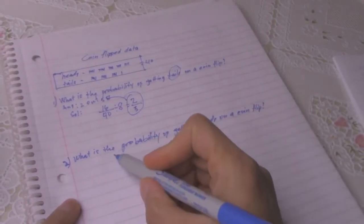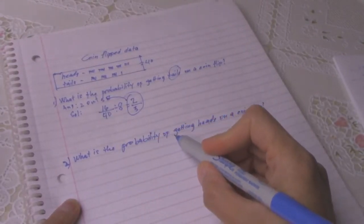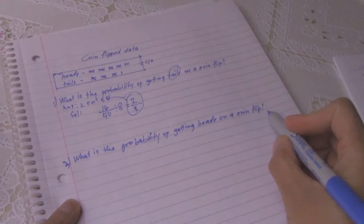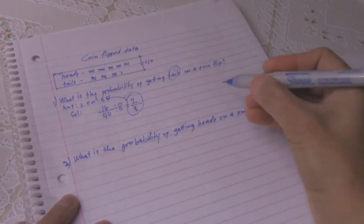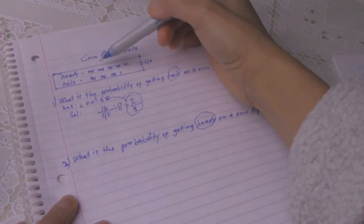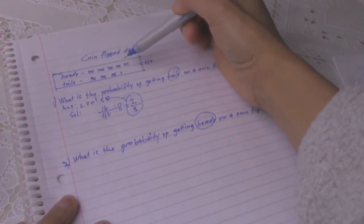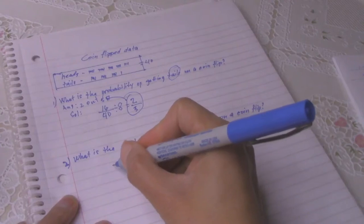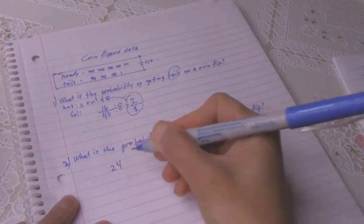Number 2 question: what is the probability of getting heads on a coin flip? So the question here is heads, so you will count the heads: 5, 10, 15, 20, 24. So there are 24 heads, so you write down 24.